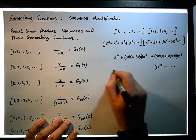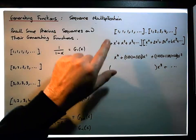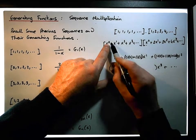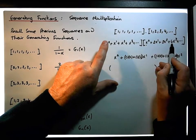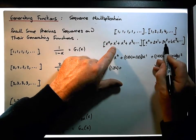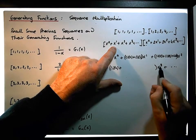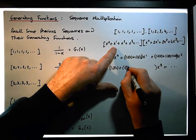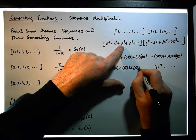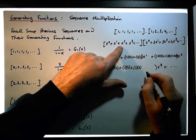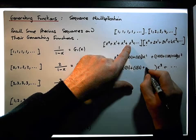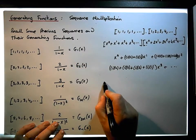Let's do the x³ term. This time it's going to have four terms, and the exponents of the x's must add to give three. So it's x⁰ times x³ — the coefficient is ones times four — plus x¹ times x², because they add to give three, so it's ones times three. Plus x² times x¹ is ones times two, and x³ times x⁰ also gives us an x³ with a coefficient of one times one.